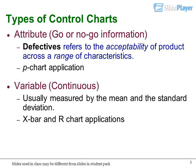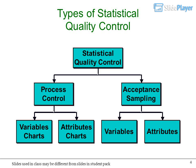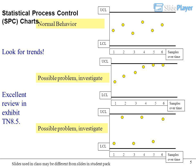Types of control charts: Go or no-go information. Defectives refers to the acceptability of product across a range of characteristics. P-chart application. Variables are continuous, usually measured by the mean and standard deviation. X-bar and R-chart applications. Types of statistical quality control: process control and acceptance sampling, for both variables and attributes.